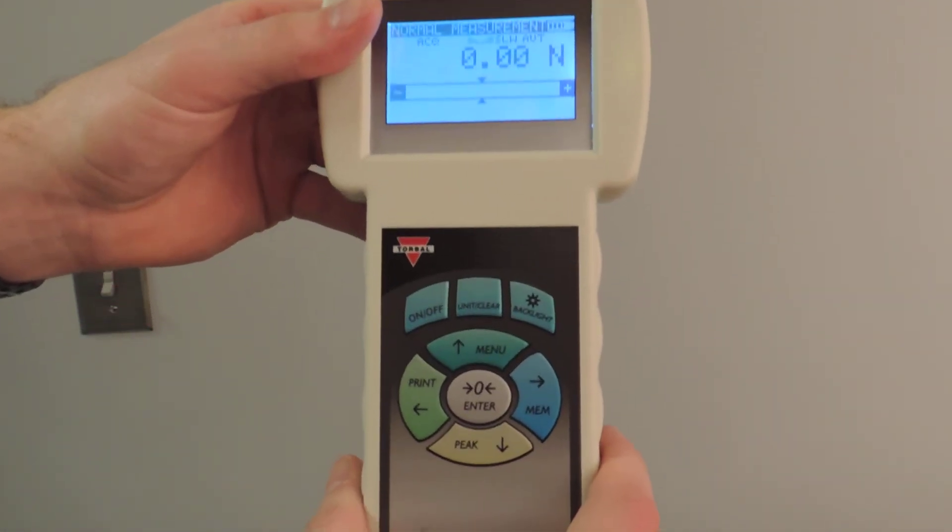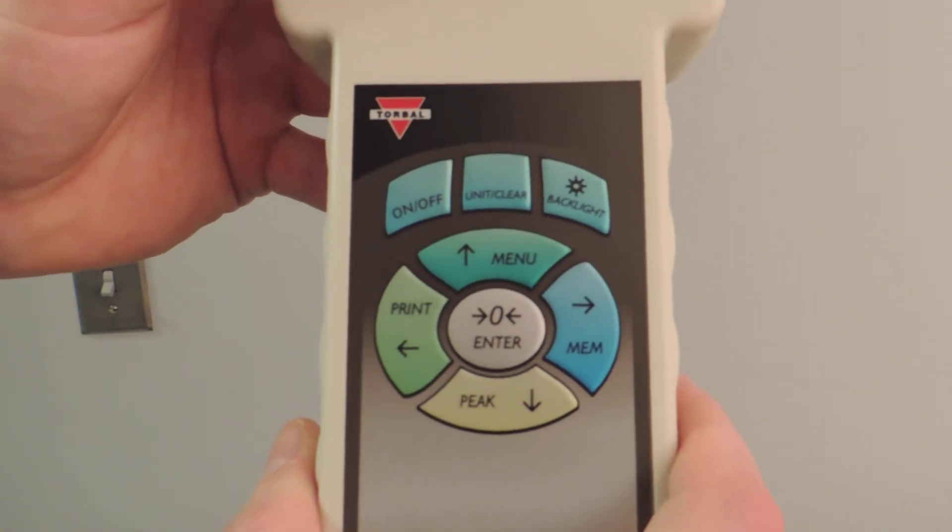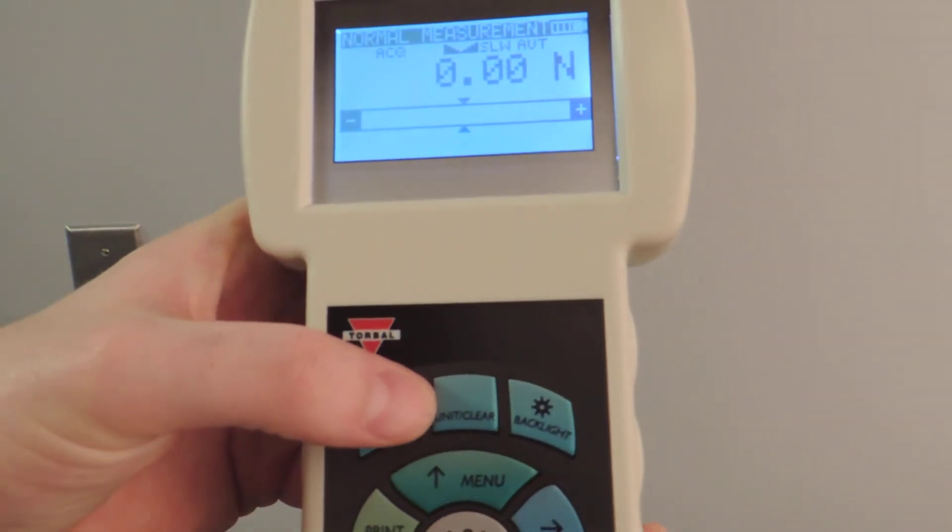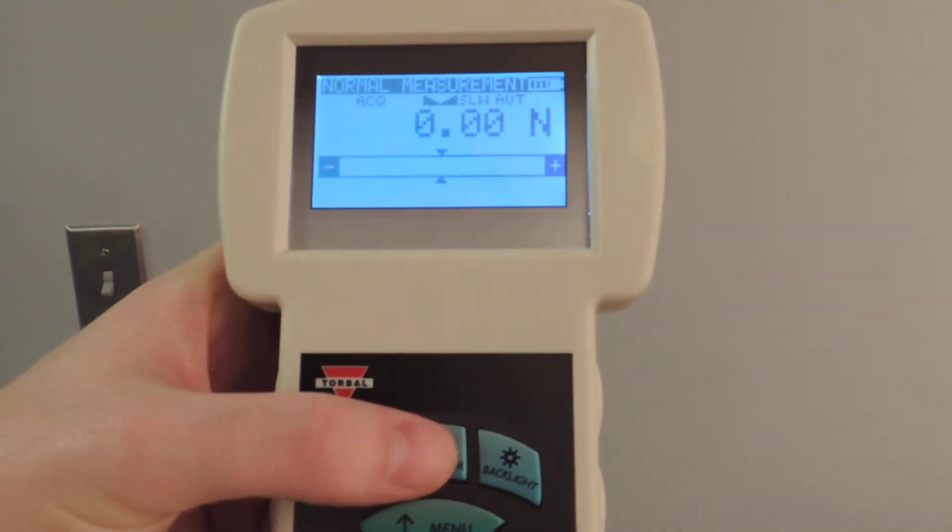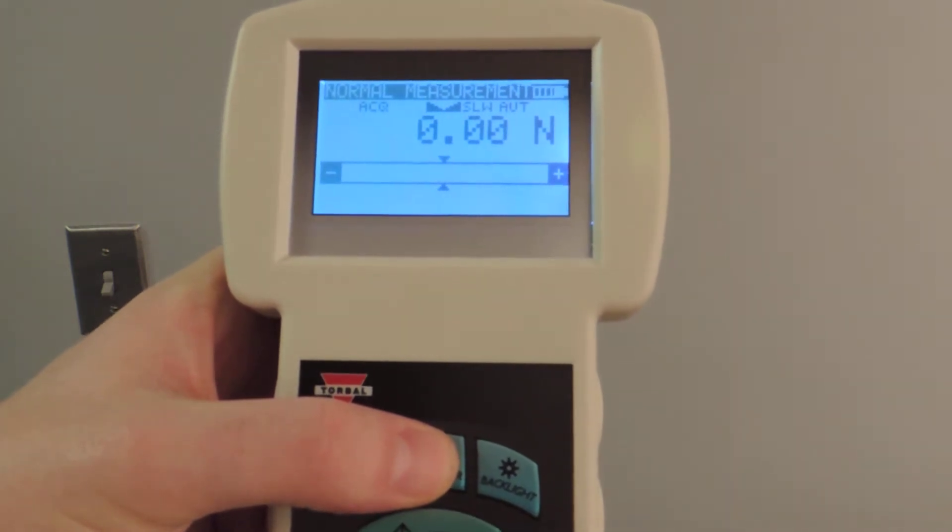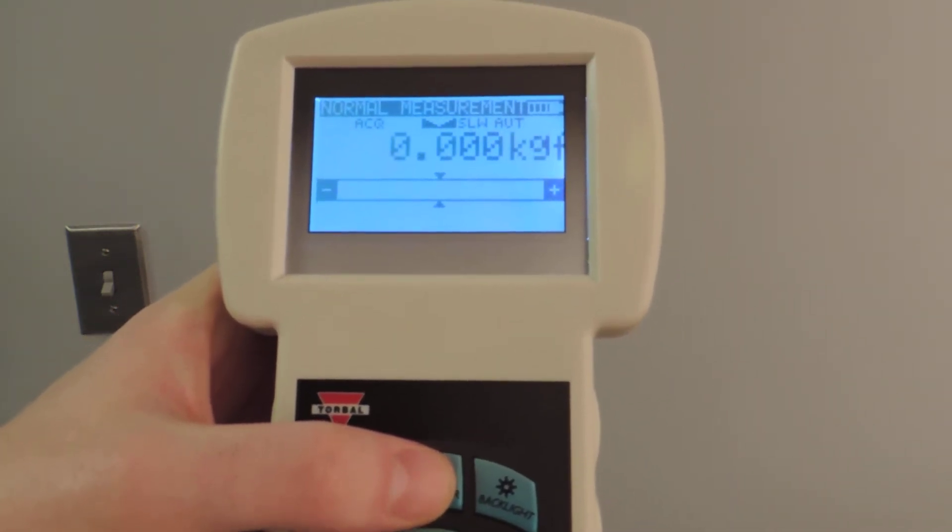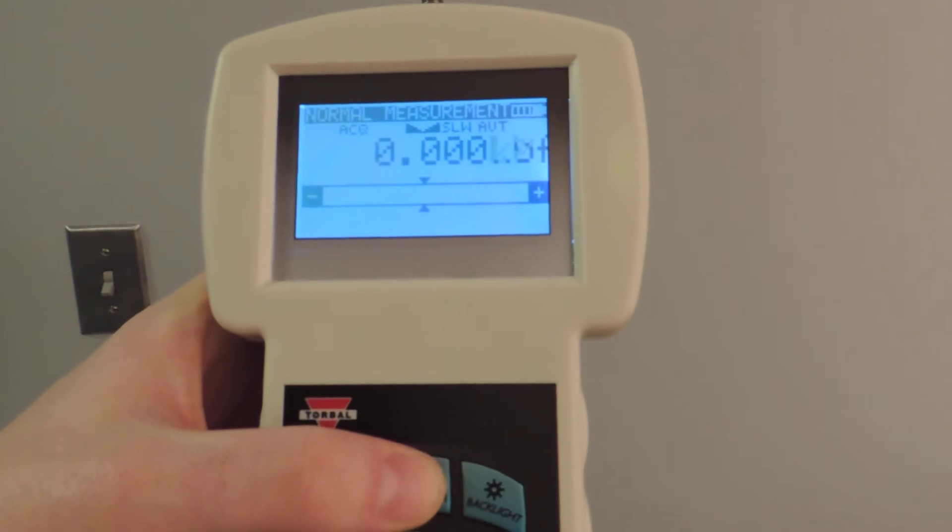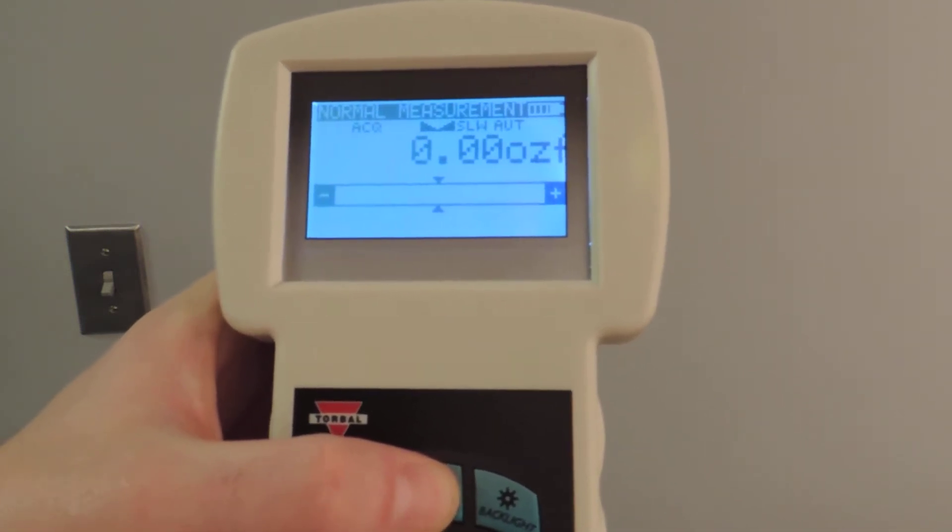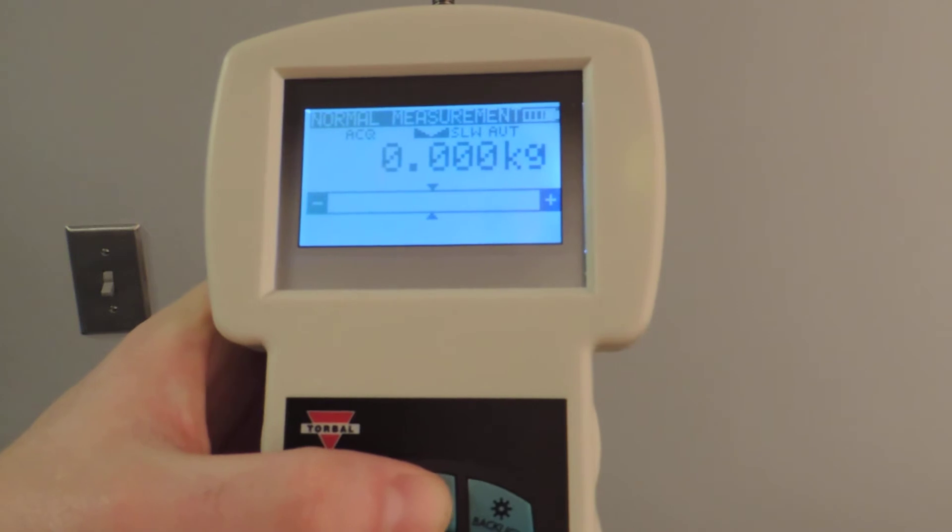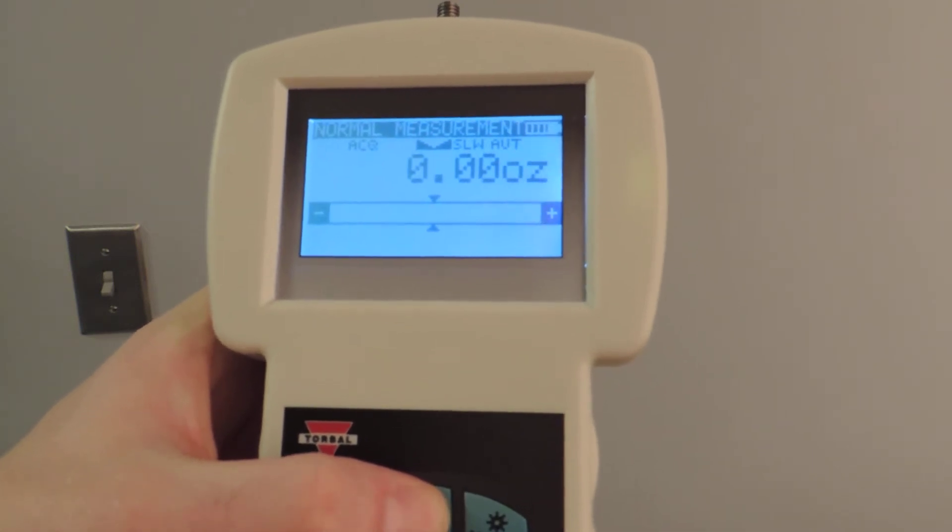If we take a closer look at the keypad, we'll see there's a variety of functions and shortcuts. Here we have the units button which will scroll between the various units that we can measure in, such as newtons, kilograms force, pounds force, ounces force, and regular kilograms, pounds, and ounces.